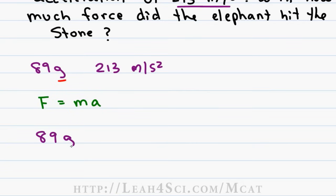We have 89 grams and we want to convert to kilograms. We know that 1 kilogram is equal to 1000 grams and we set it up as 1 over 1000 allowing me to cancel out grams.